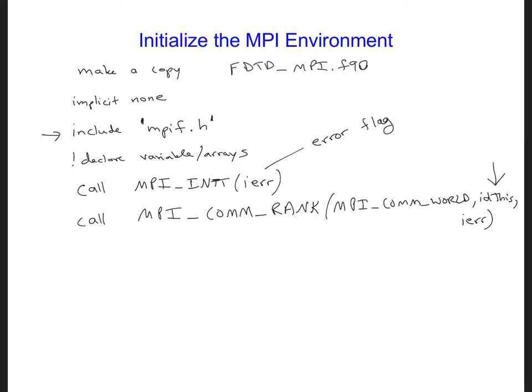Since we have two processors, the id_this rank of our processors will be 0 or 1. So id_this on processor 0 will be equal to 0, and id_this on processor 1 will be equal to 1.